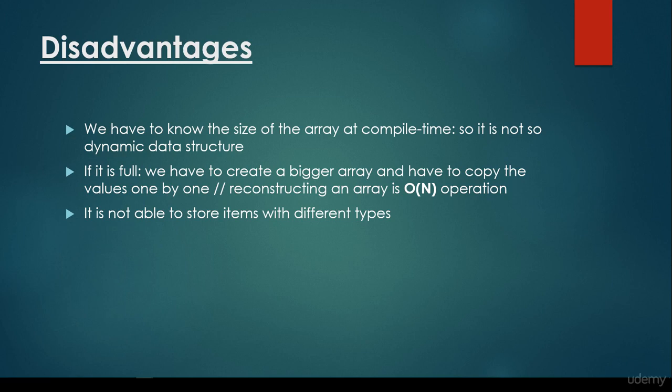So basically, arrays are very good and useful when we know the indices of the item we would like to return. So we have a one-dimensional array, and for example, we know that the index of the item we are looking for is 123. In this case, we are able to return it in O(1) constant time complexity.